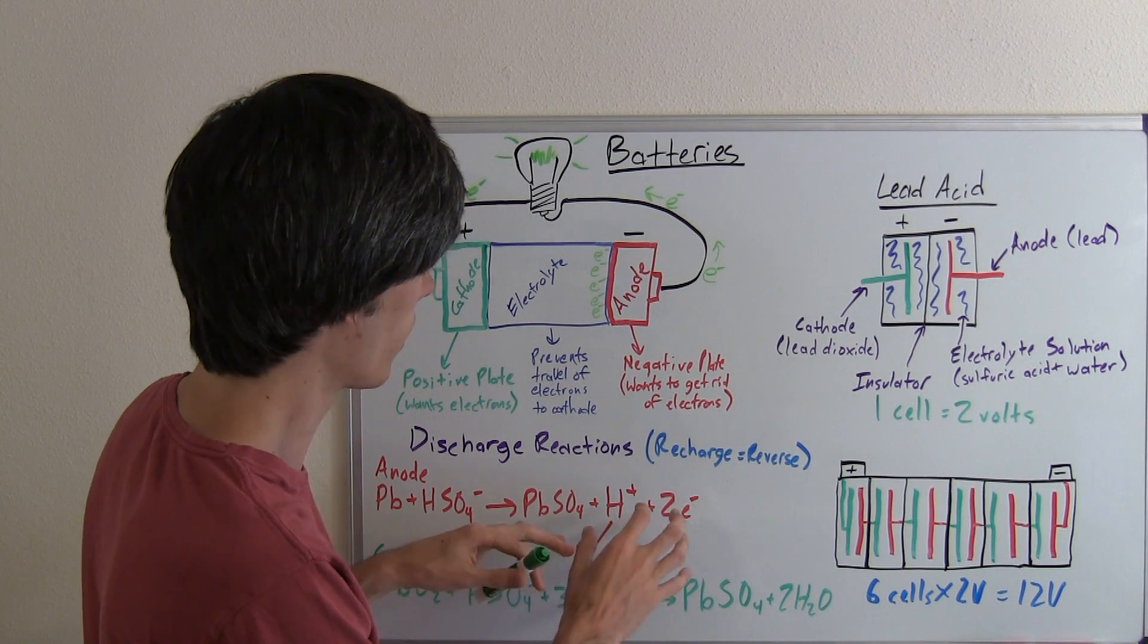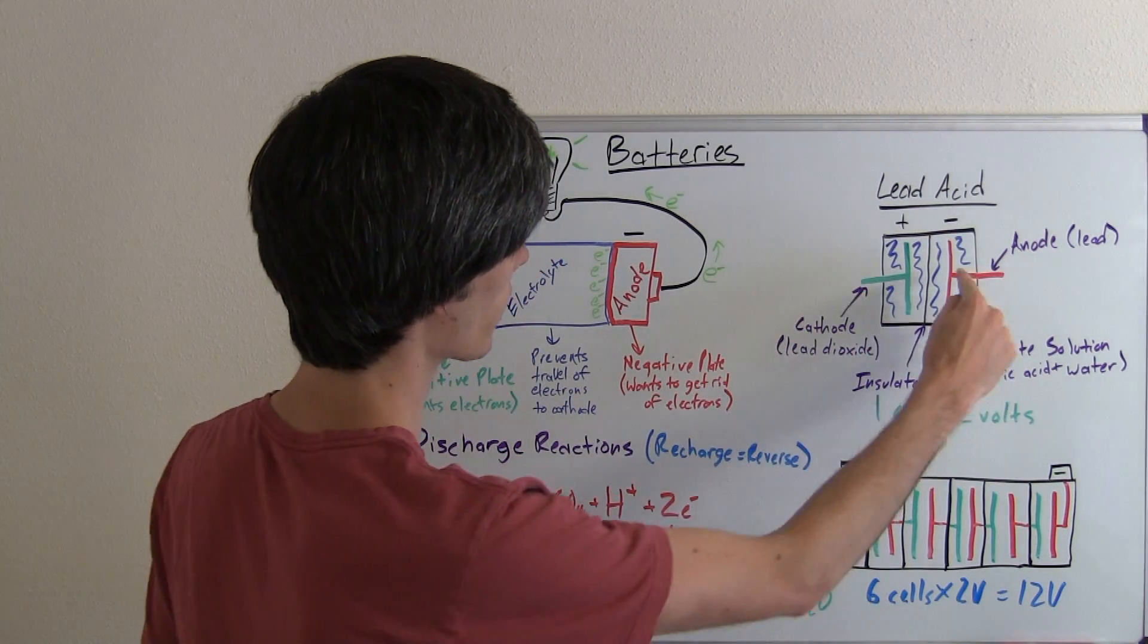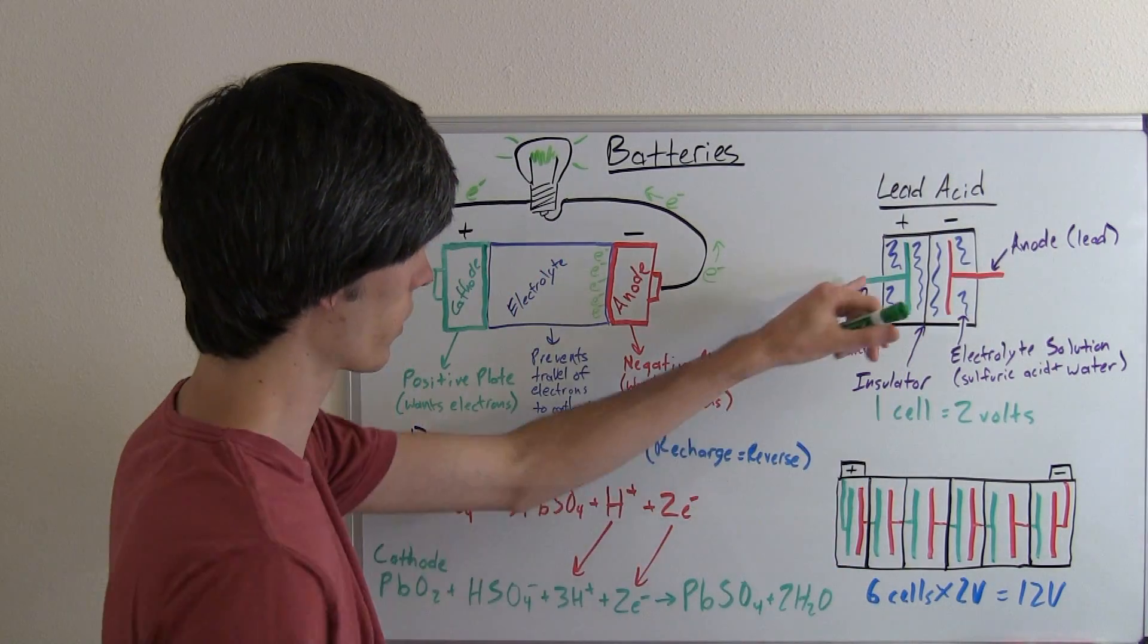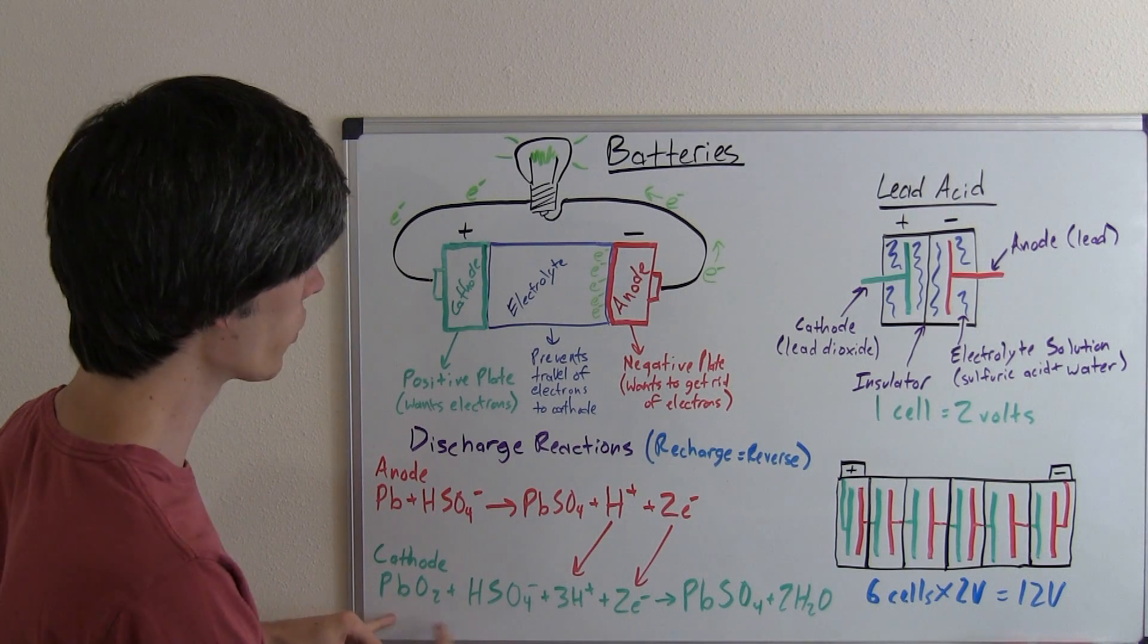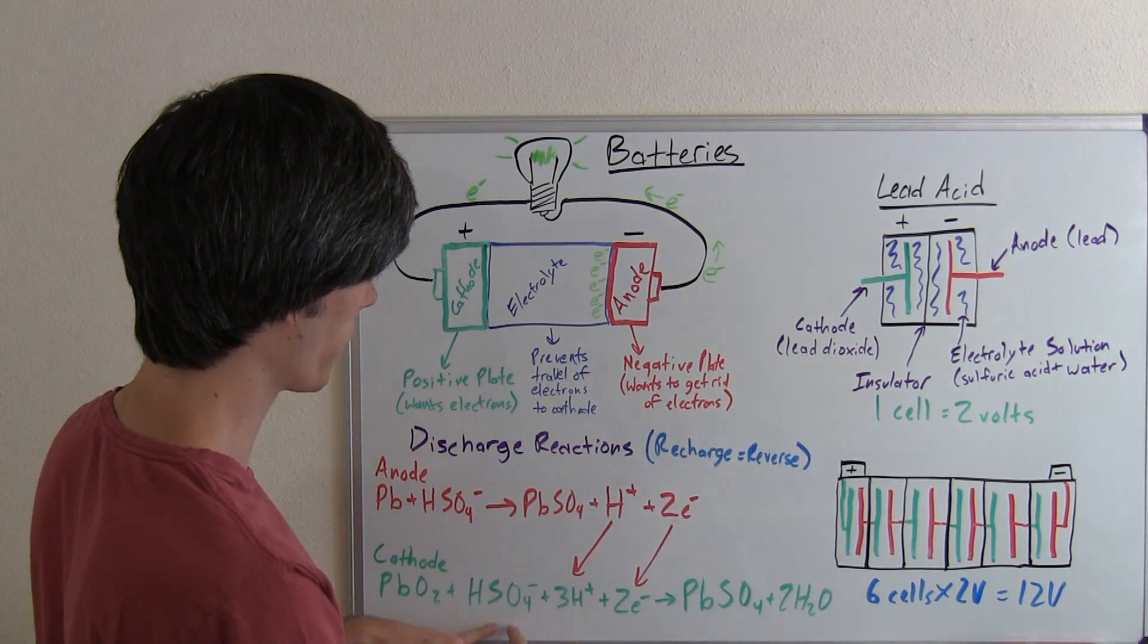And so what that means is that's what it's allowing to transfer over to the cathode. So these two electrons then transfer over to this cathode. So, the lead dioxide here on this side mixes with the sulfuric acid,